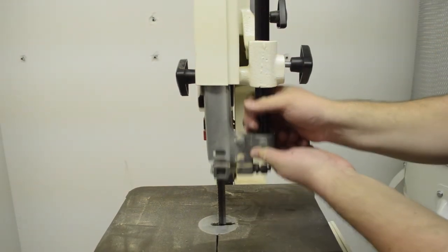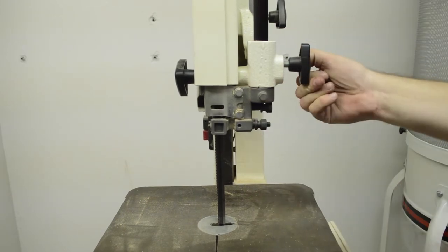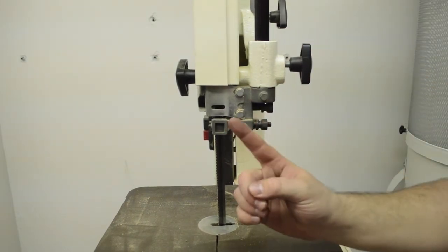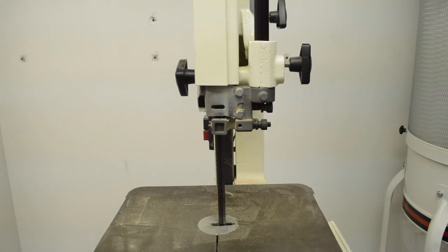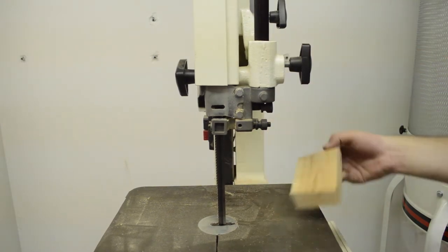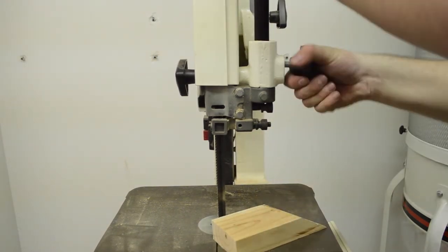Before you start the bandsaw, lower the blade guard so that it is no more than a quarter of an inch above the material that you are cutting. A large gap increases the risk of your fingers being sent through the blade and skewed cuts due to the flex.